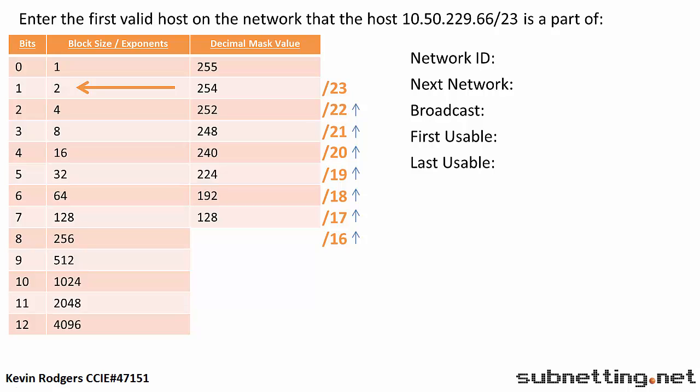Remember that we are working in the third octet. Now that we have the block size, we can find our network. To do that, we have to find the largest multiple of 2 that does not go over 229. This is our third octet in the IP address. In this case, we know that it is going to be 228, but we can confirm.